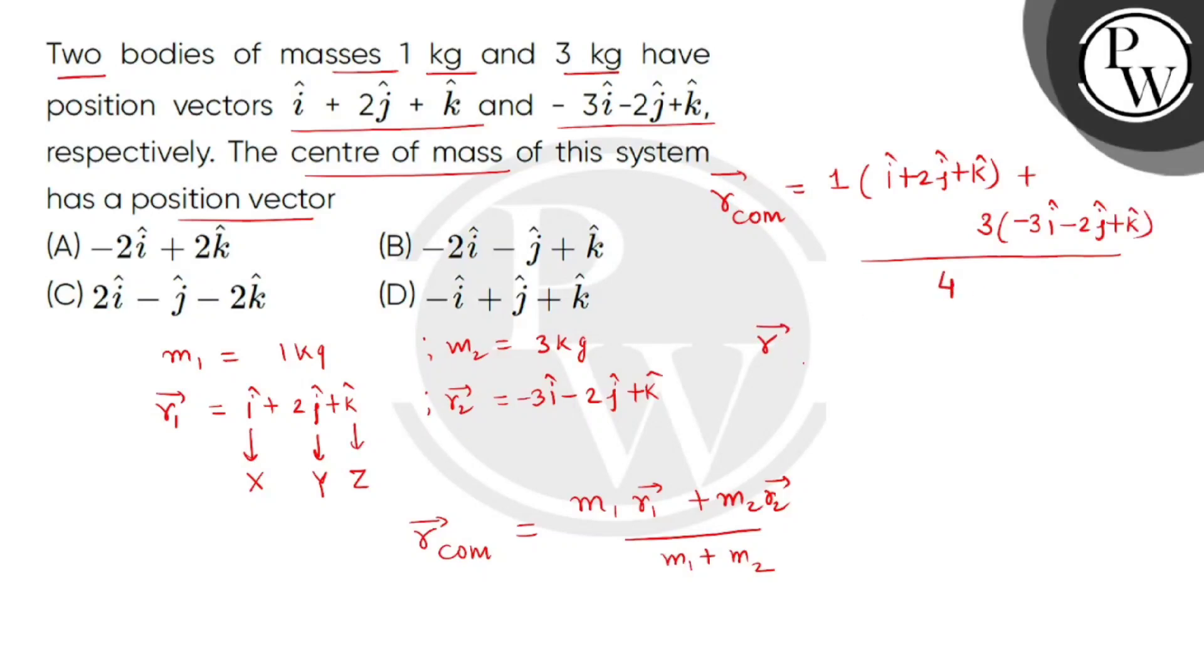So from here we get the position vector of center of mass is equal to 1 by 4 within bracket minus 8i cap minus 4j cap plus 4k cap.